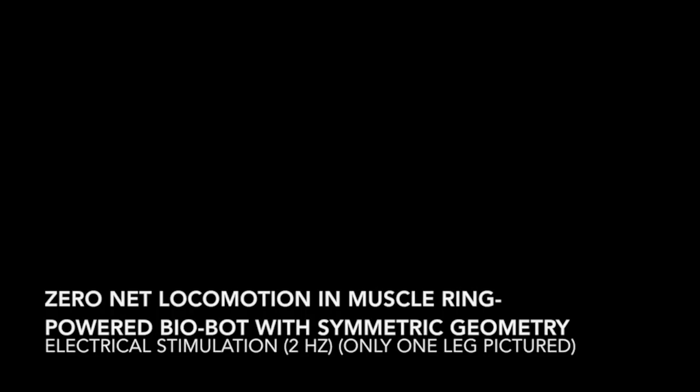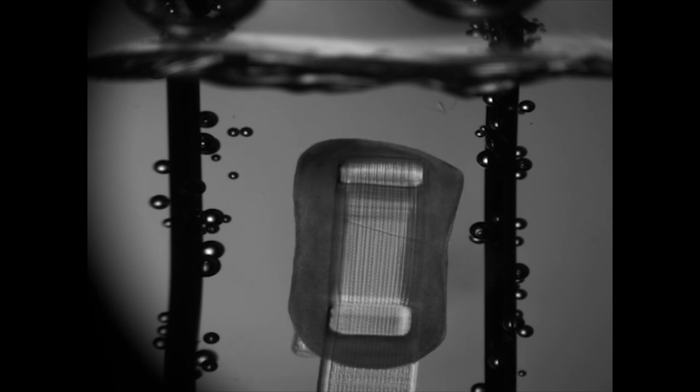When optogenetic muscle is triggered by a blue light stimulus, it generates a contractile force. When this muscle is coupled to a 3D printed skeleton, this contractile force can be converted into useful work.